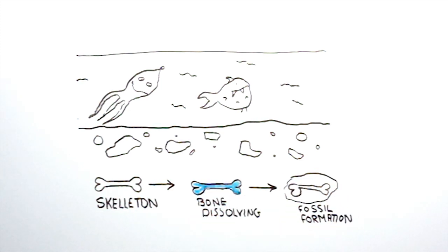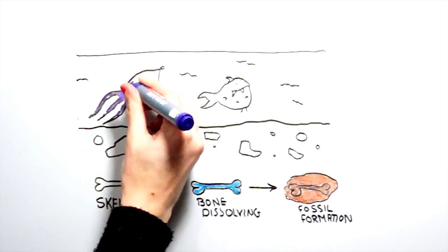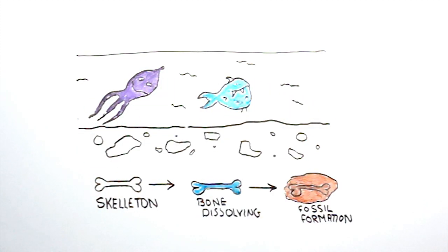When this happens, groundwater will start to dissolve your bones away and leave a bone-shaped hole in the rock. Then minerals in the groundwater will start to crystallize in the bone-shaped holes and form your fossil.